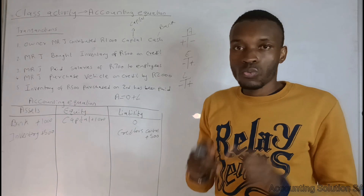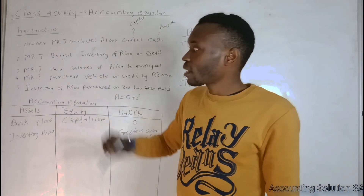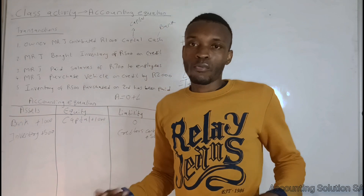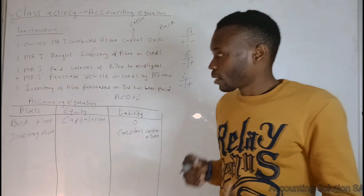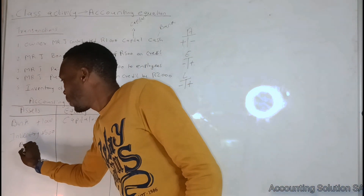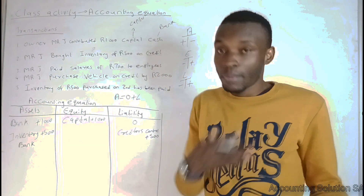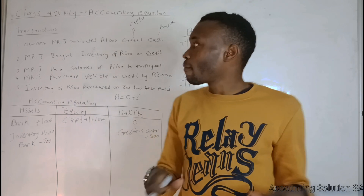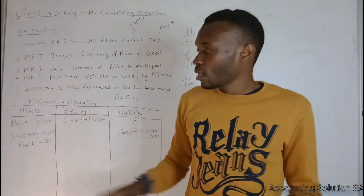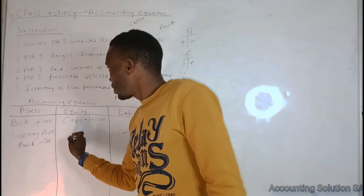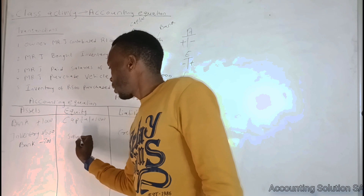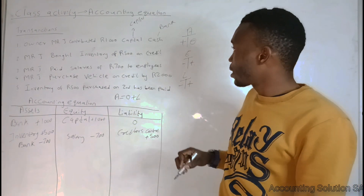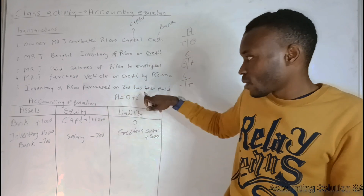Transaction three: Mr. J paid a salary of 700 to employees. There are two keywords — salary and paid. 'Paid' means money goes out of the bank, so bank gets minus 700. Salary is an expense, which falls under equity, so salary gets minus 700 as well. When we credit an asset, we debit equity — the equation must balance.